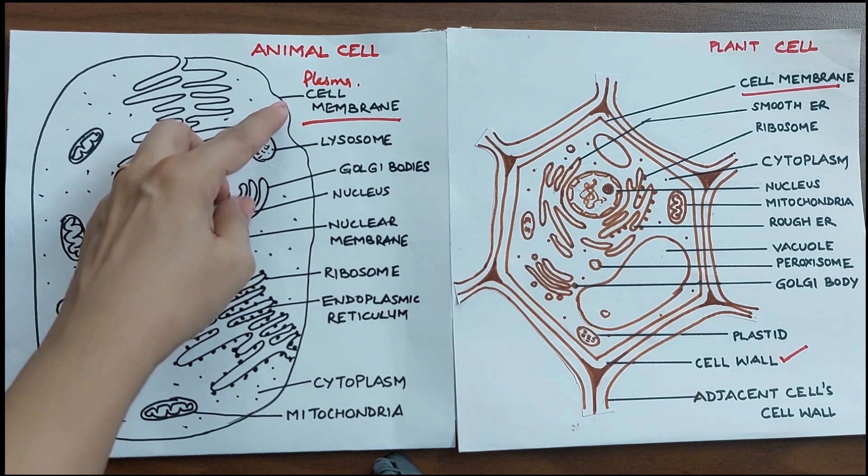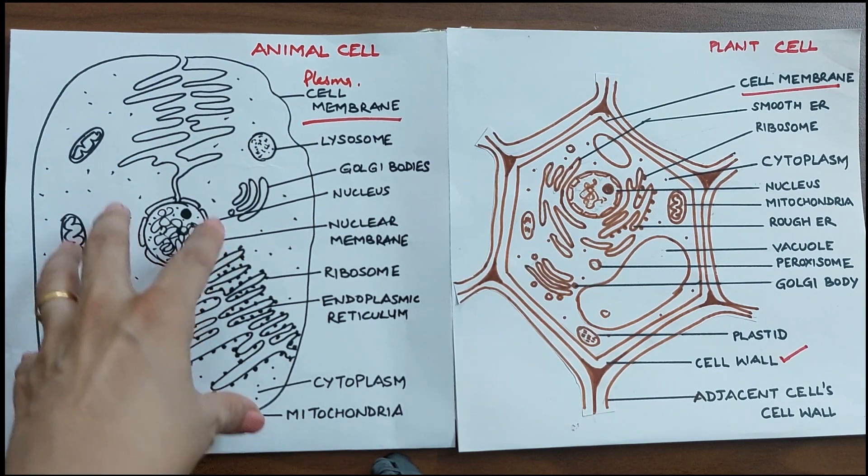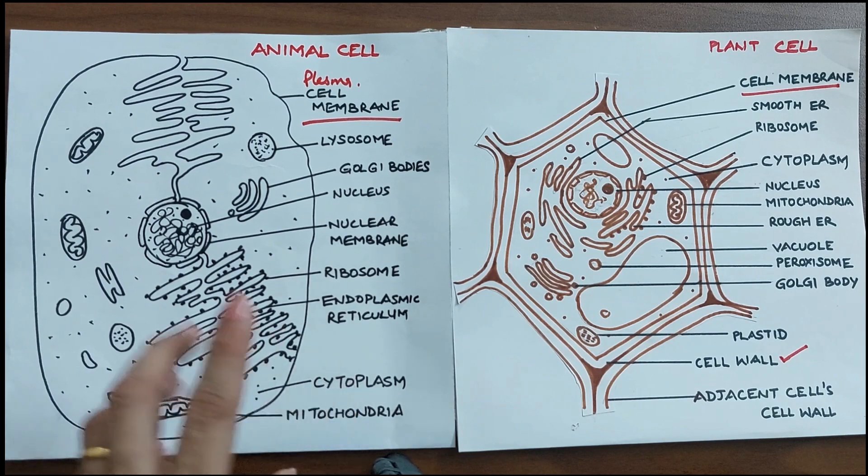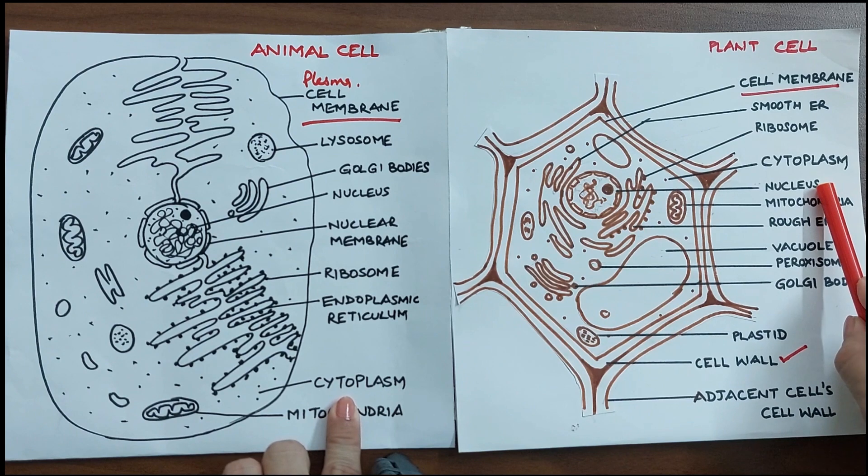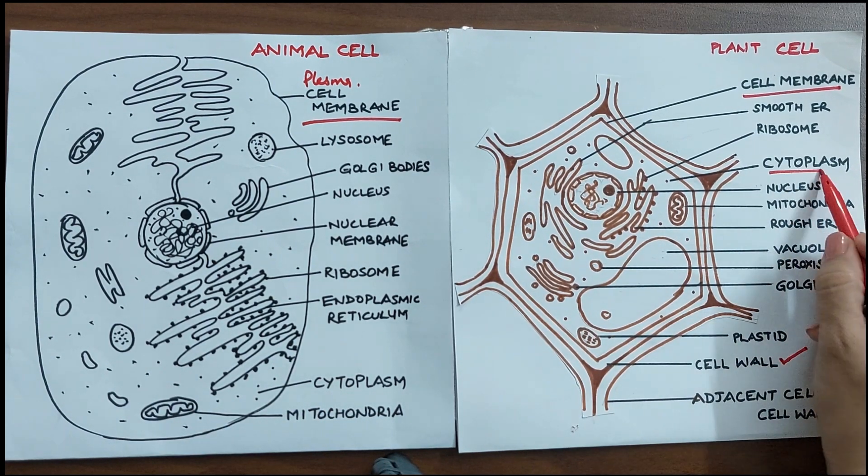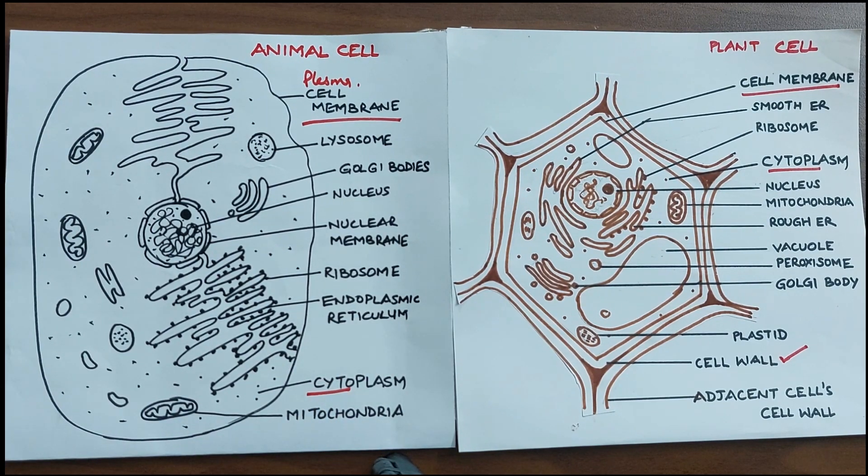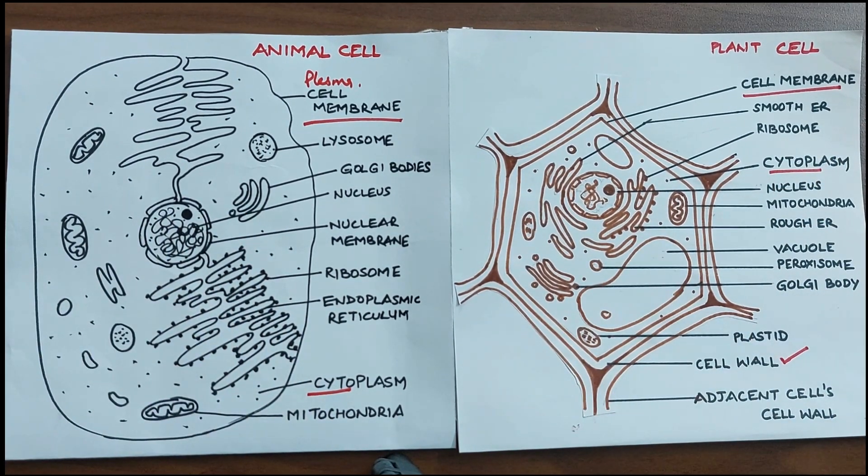This plasma membrane encapsulates all these organelles which are present in a semi-fluid-like structure which is known as the cytoplasm. Cytoplasm again is present both in plant as well as animal cells. It is the cytoplasm inside which you have all the organelles which are floating around.